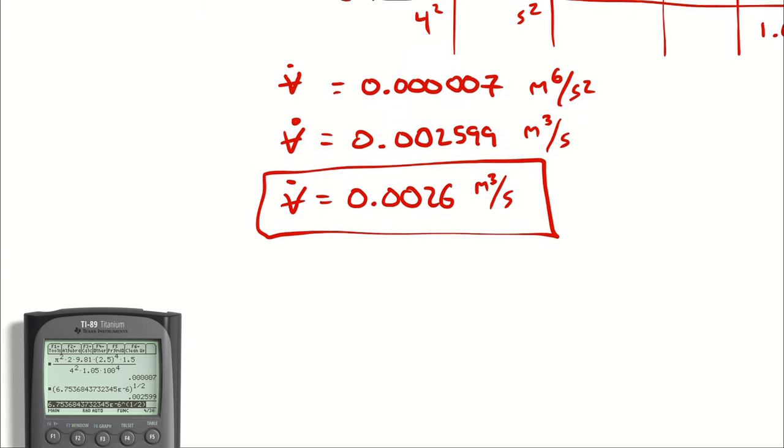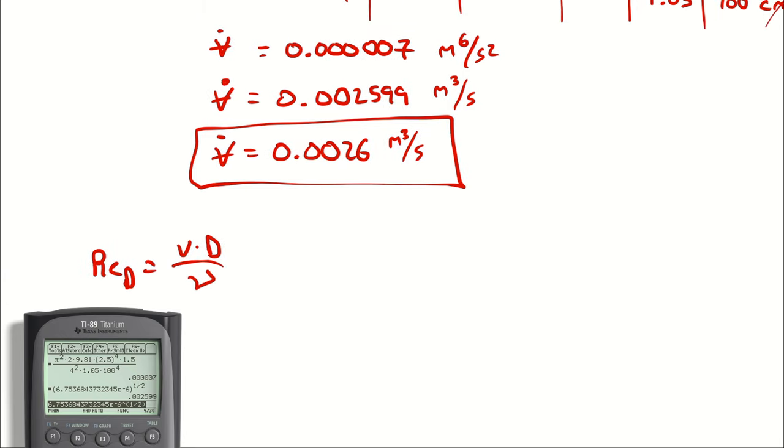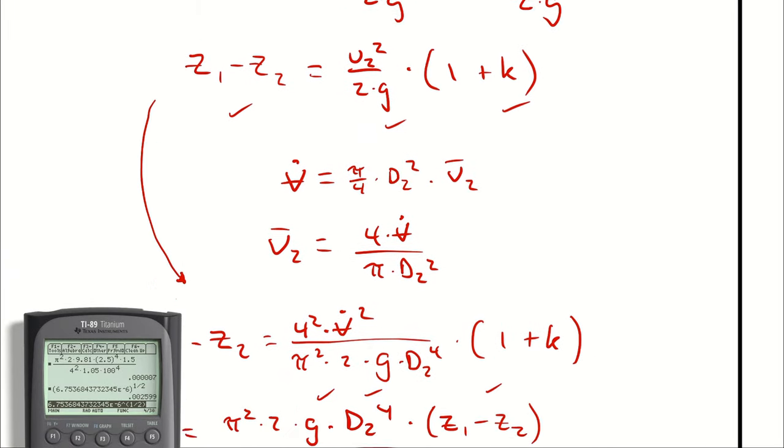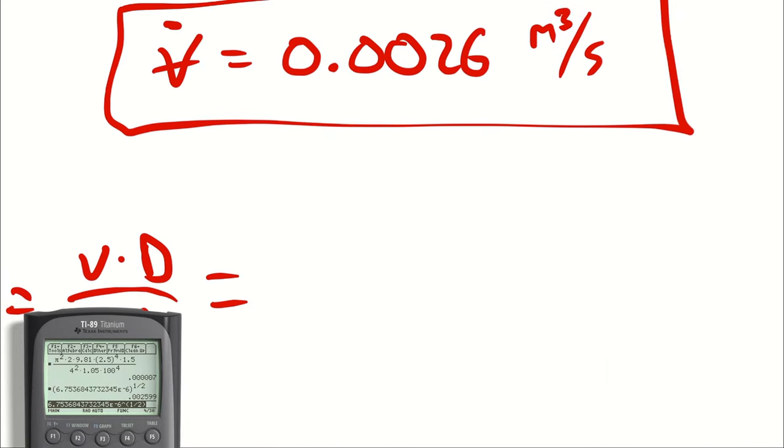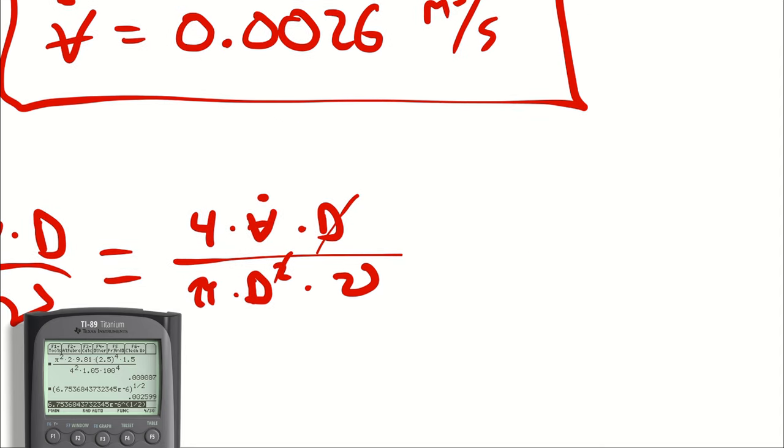So the last thing to do now is to double check my assumption of turbulent flow. To do that, I will calculate a Reynolds number. And because I have water, I'm going to use the kinematic form to limit how many things I have to look up. Again, since I have volumetric flow rate, not velocity, I will make the same substitution that I did earlier. 4 times volumetric flow rate over pi times diameter squared. One of the diameters cancels and I'm left with 4 times the volumetric flow rate divided by pi times diameter times the kinematic viscosity of water at 20 degrees Celsius.